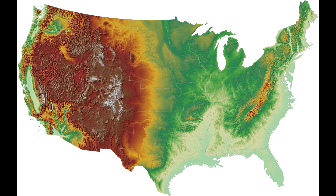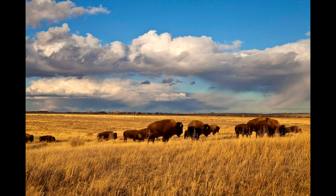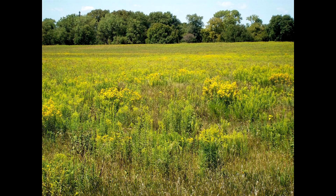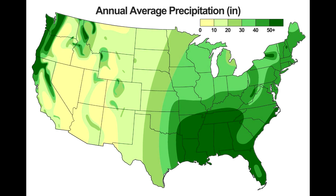East of the Rockies things really start to change. Once you're into the Great Plains there are no mountain ranges to stop or affect air masses. The western Great Plains are very dry with short-grass prairie and little precipitation. As you move east you get more precipitation and more greenery — tall-grass prairie in the eastern Great Plains. This is because warm, moist air masses from the Gulf of Mexico are able to come up into the middle of the country with nothing to stop them.